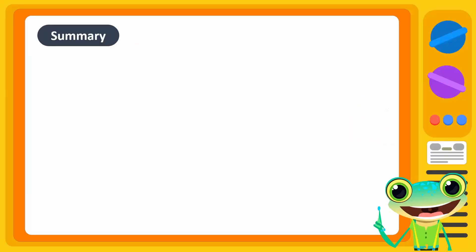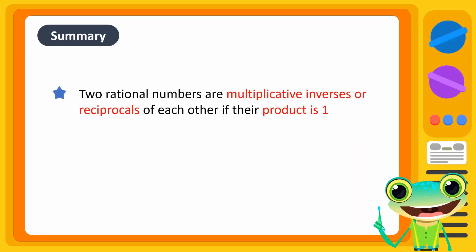To summarize, two rational numbers are multiplicative inverses or reciprocals of each other if their product is 1. 0 is the only rational number whose multiplicative inverse or reciprocal does not exist.